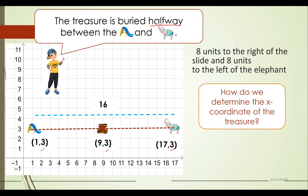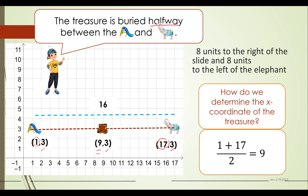How do we determine the x-coordinate of the treasure? The slide has x-coordinate 1 and the elephant has x-coordinate 17. The x-coordinate of the treasure is 9. We can see that 1 plus 17 divided by 2 equals 9. These are the x-coordinates of the two endpoints, and dividing their sum by 2 gives us 9. The clue word is 'halfway.'